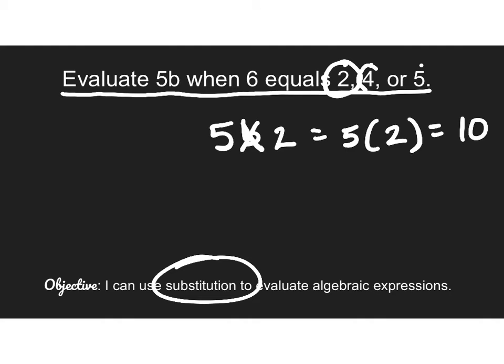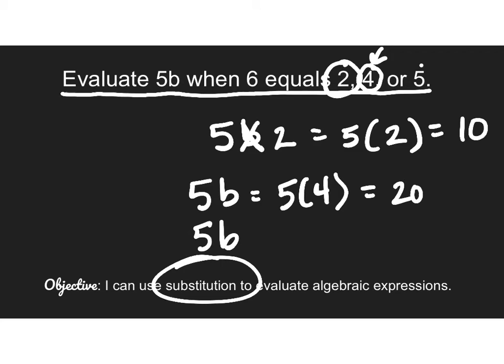Done with that one. Now I'm going to move on to this one. I'm looking at the expression 5 times b, but I'm going to substitute. Now b has a value of 4. So that's the same as saying 5 times 4, which is equal to 20. And last but not least, the value of b is going to be 5. So that's the same as saying 5 times 5, which is 25.